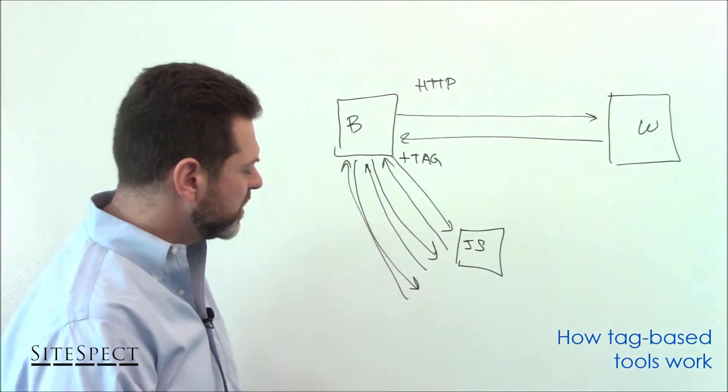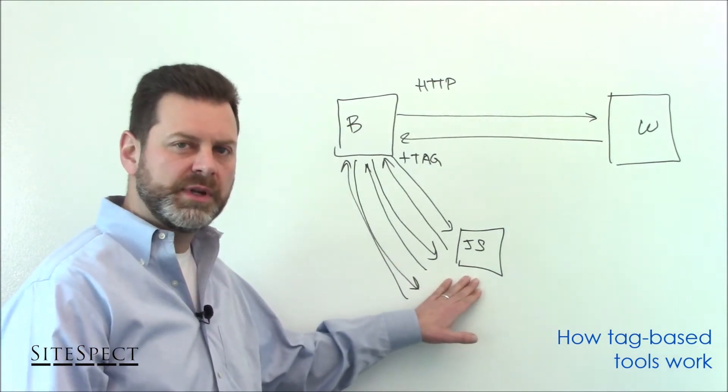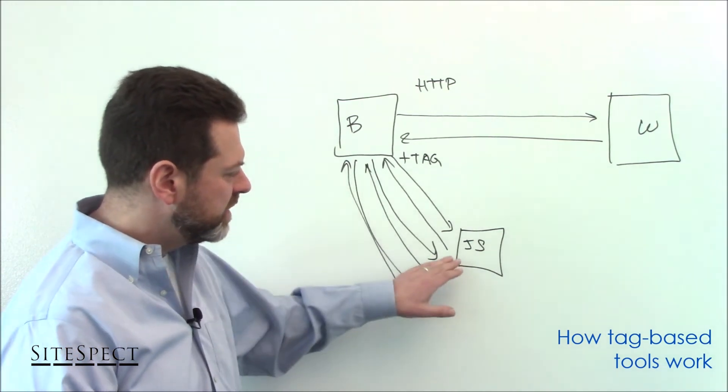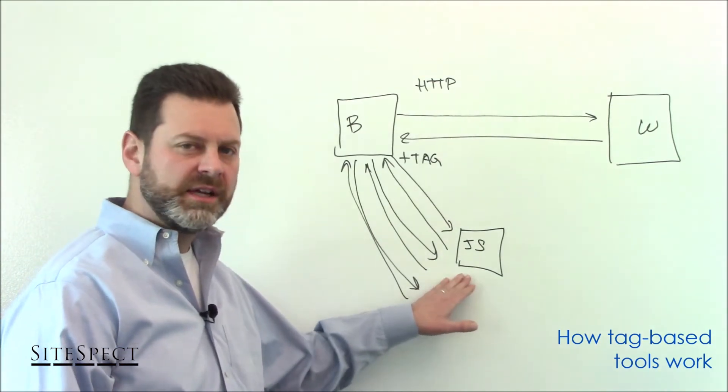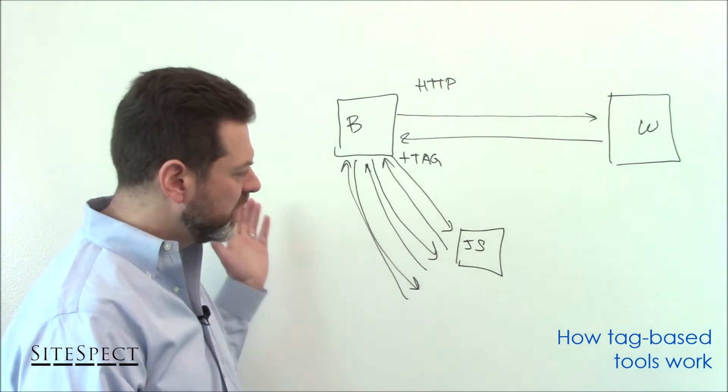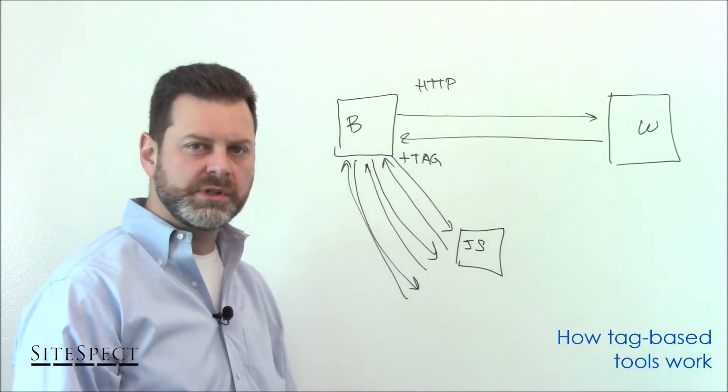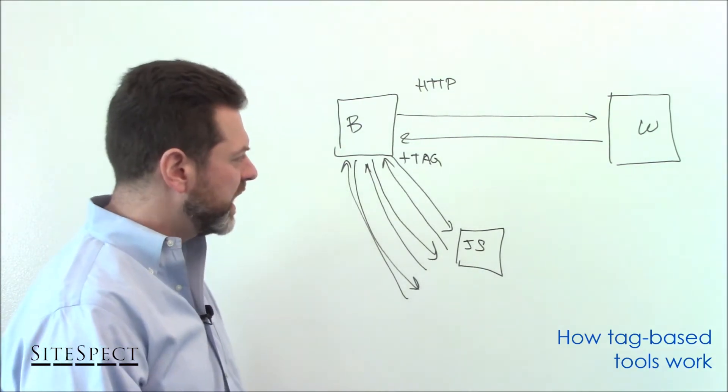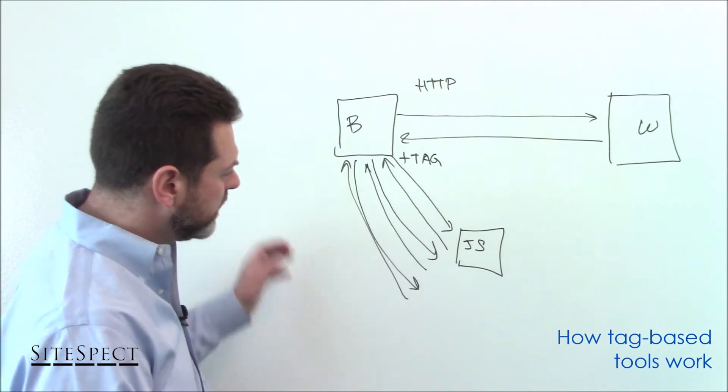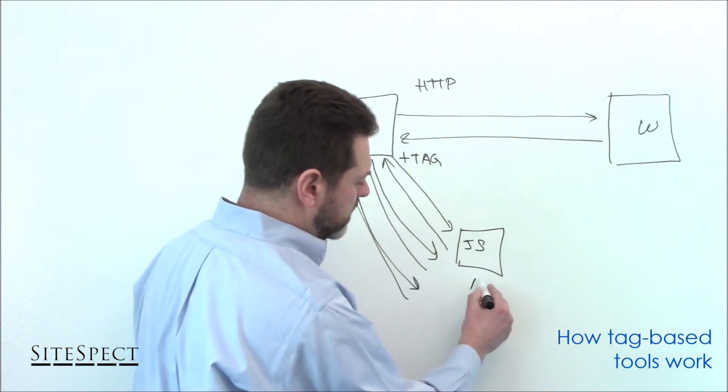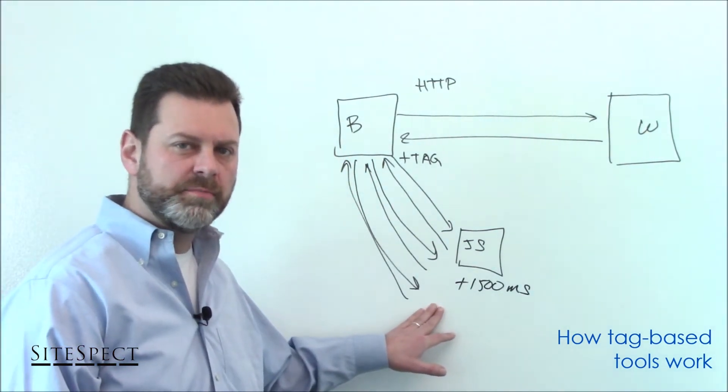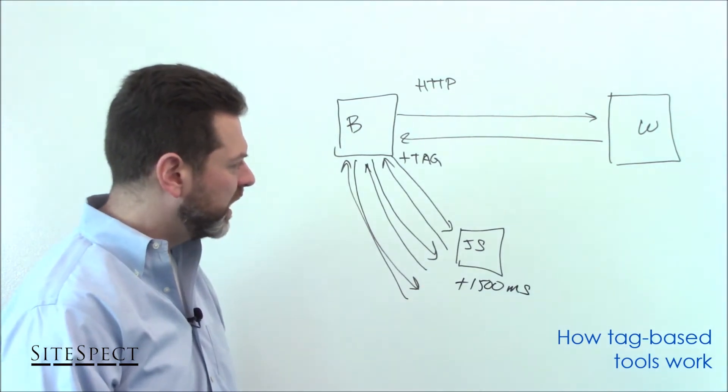So that's essentially what happens here. And in typical testing, and you can read third-party studies about this that have done the analysis and the benchmark. But typically, in what we see in our experience, JavaScript tags will add at least 1,000 milliseconds, if not more, to the overall page load and page render. So, you know, time is money. And obviously, if you can reduce or eliminate latency and certainly flicker, then your end users will be better off for it and you as a business will be better off for it. So that is sort of the baseline that you can expect from tag-based tools that are available on the market that you may have experience with.